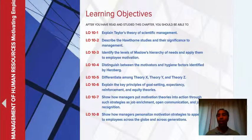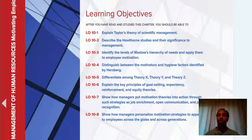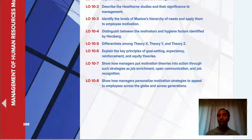Learning Objectives: Explain Taylor's Theory of Scientific Management. Describe the Hawthorne studies and their significance in management. Identify the levels of Maslow's hierarchy of needs. Distinguish between the motivators and hygiene factors identified by Herzberg. Differentiate among Theory X, Theory Y, and Theory Z. Explain the key principles of goal setting, expectancy, reinforcement, and equity theories. Show how managers put motivation theories into action and how managers personalize motivation strategies to appeal to employees across the globe and across generations — dealing with baby boomers all the way to millennials.